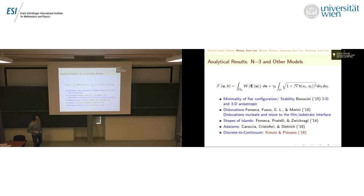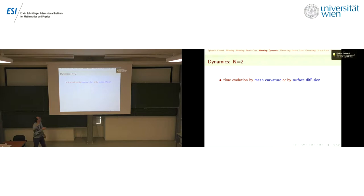That covers roughly the static case. Now let me go to the dynamics. In two dimensions first, then three dimensions. The types of evolution for epitaxial growth are motion by mean curvature or surface diffusion.